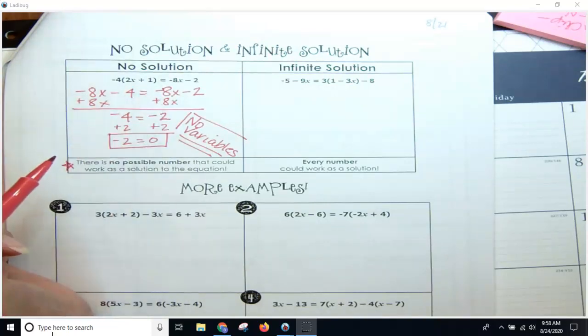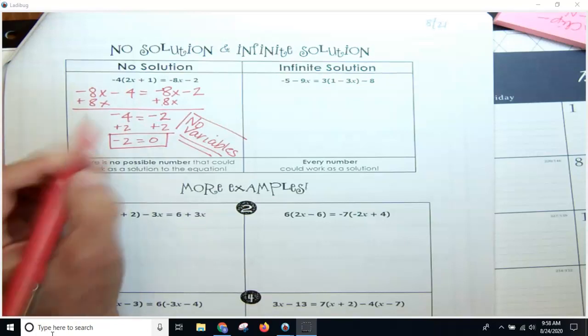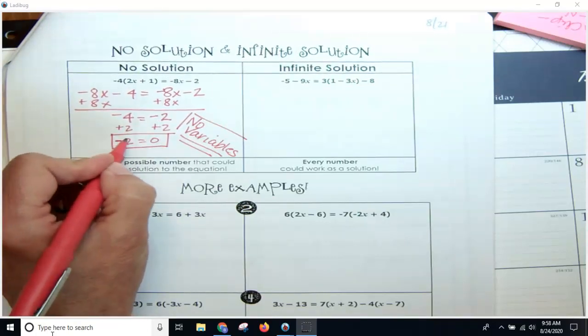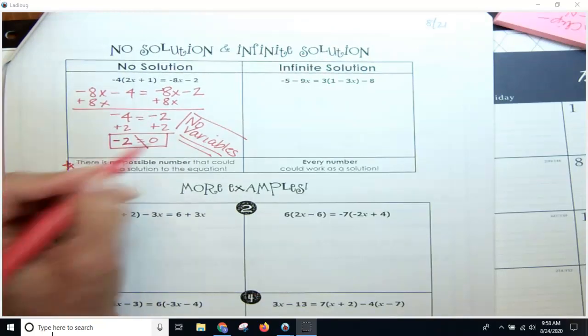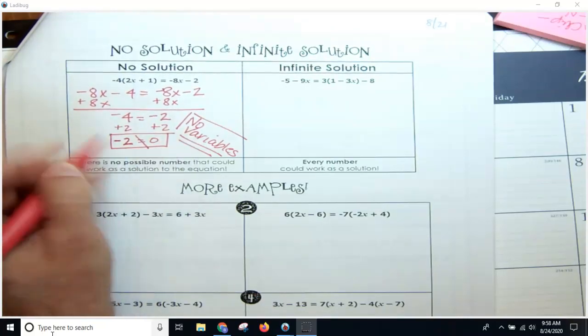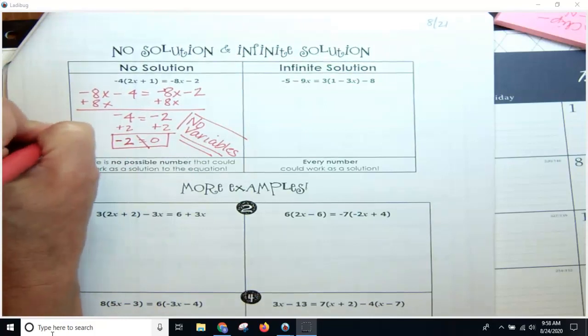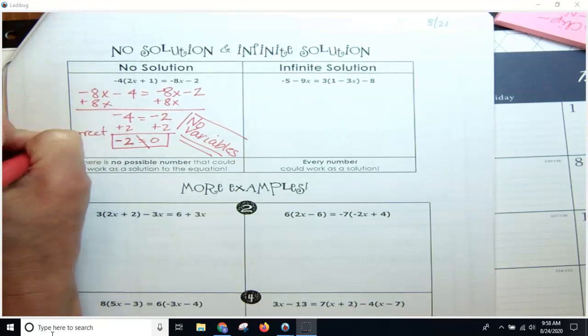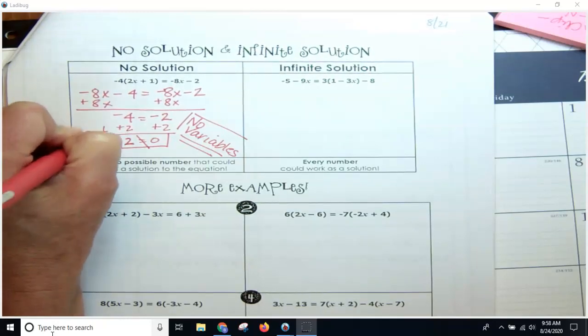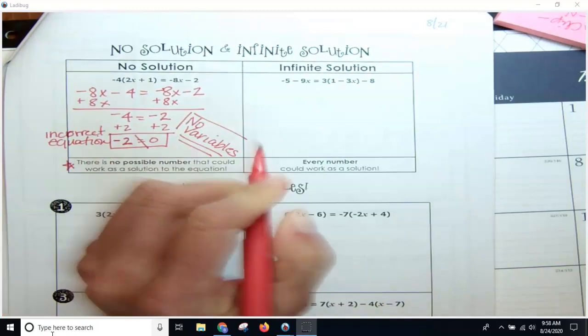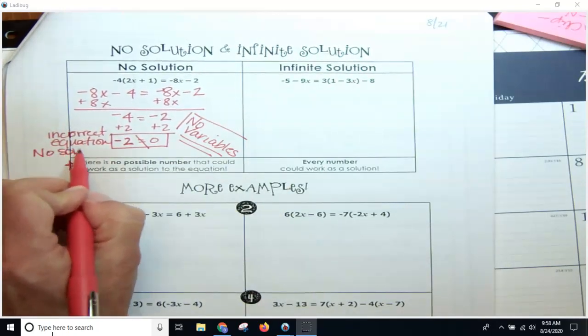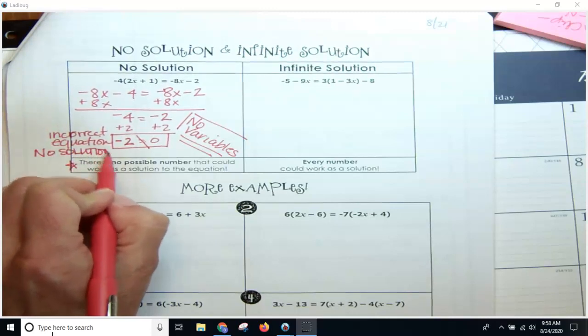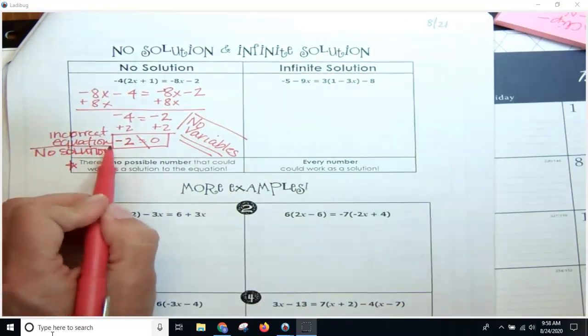Okay, because negative 2 does not equal 0. So when there's no variables and you have an incorrect equation—incorrect equation—this is going to give you no solution.